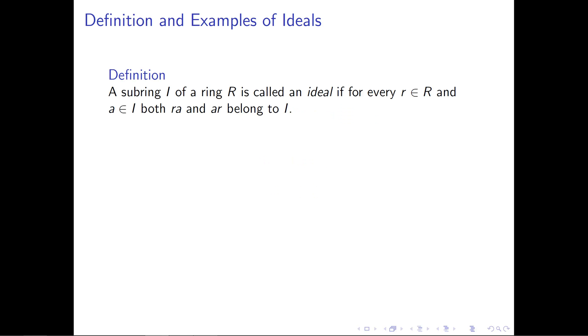Let's start with a definition and some examples of ideals. A subring I of a ring R is called an ideal if for every r in R and a in I, both ra and ar belong to I.